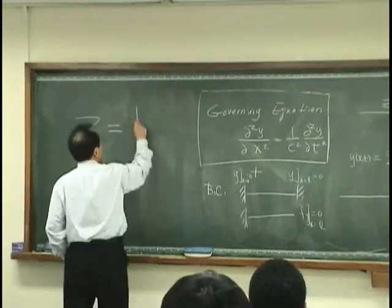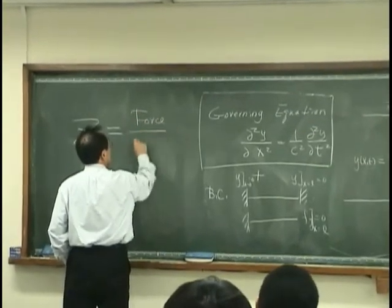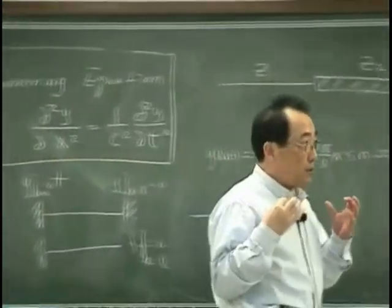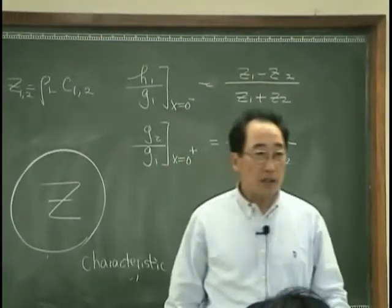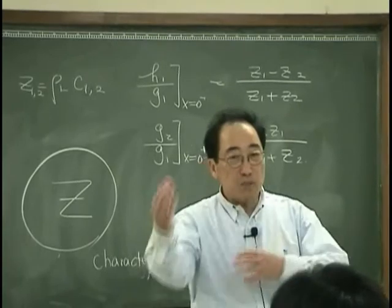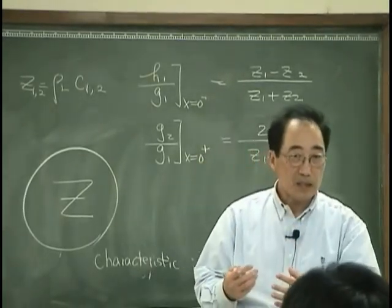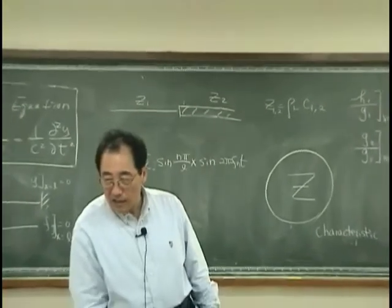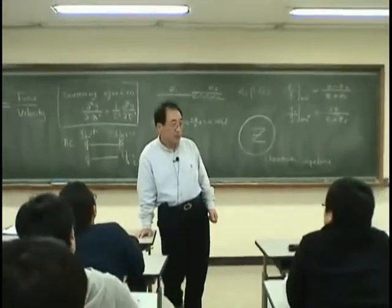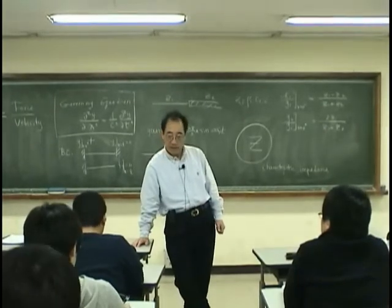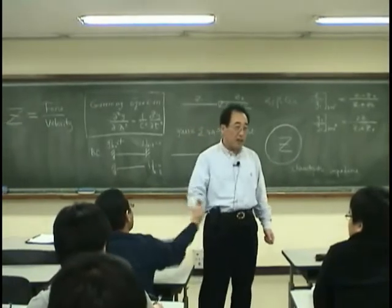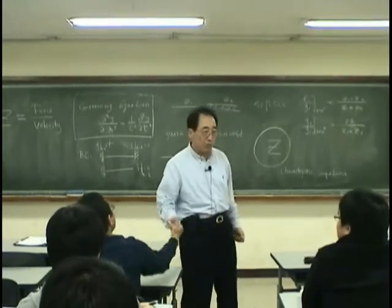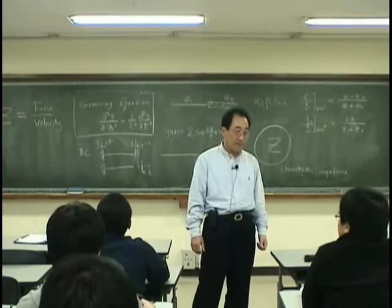Impedance is essentially the ratio between force and velocity. Impedance is a strange quantity — it expresses that ratio. I could argue that the impedance of this desk is infinity, because there is no displacement, no velocity. And the impedance of this person's hand has a finite amount, because when I exert some force, the point is moving.